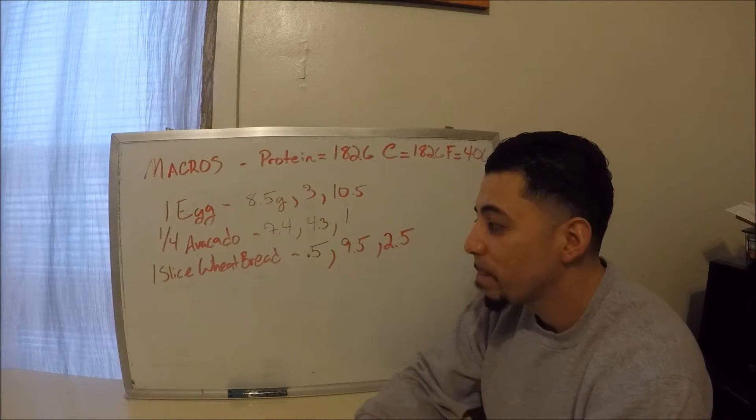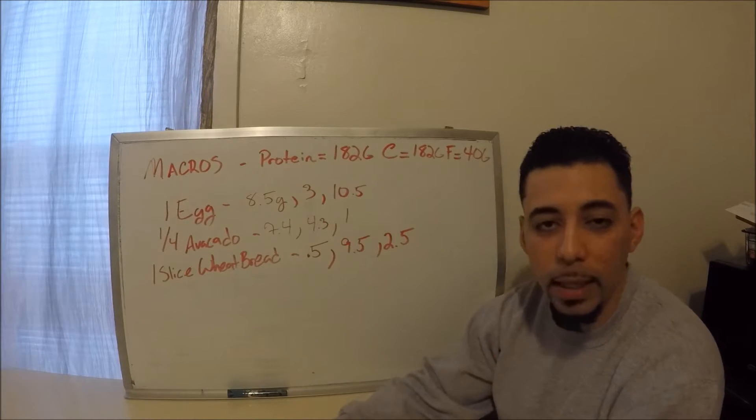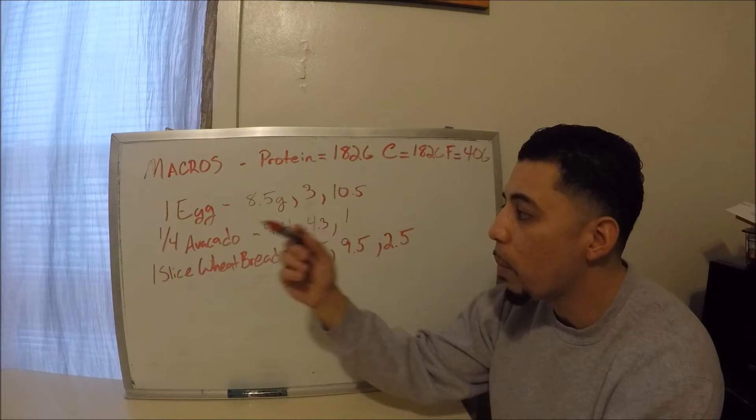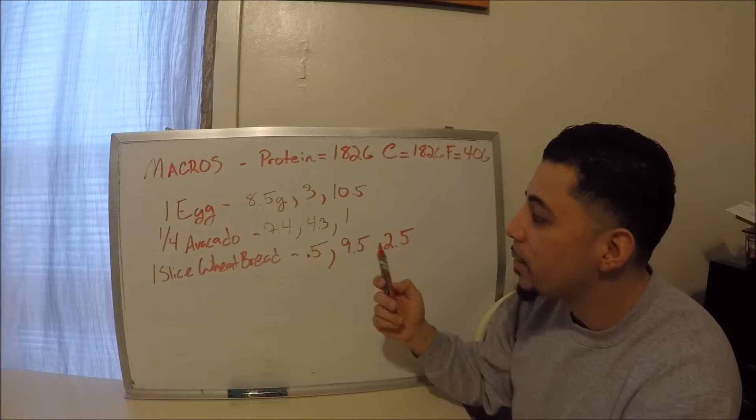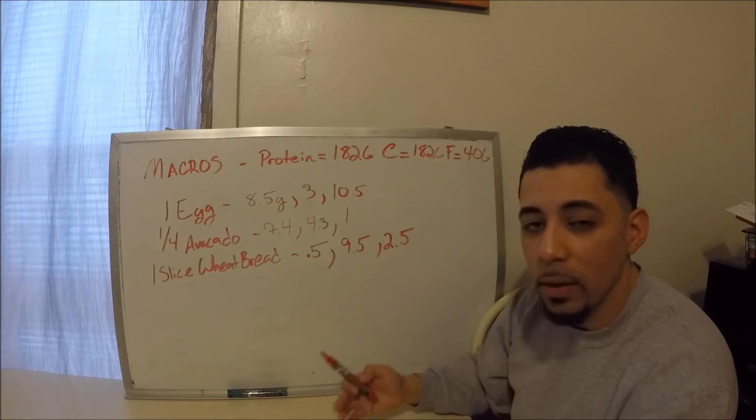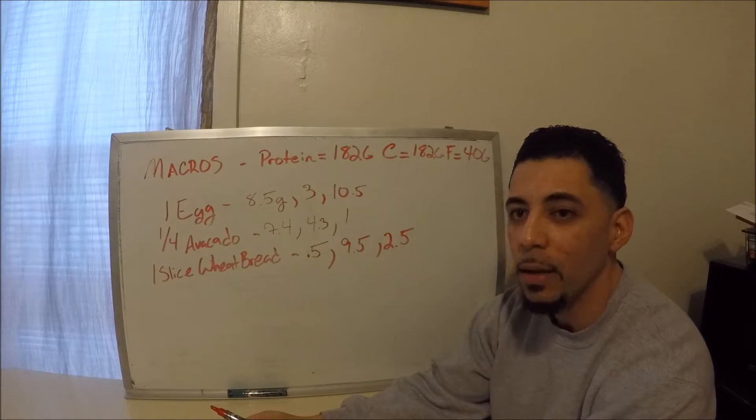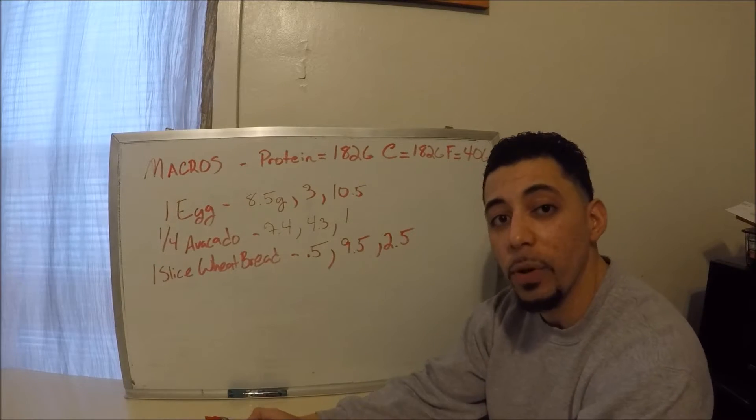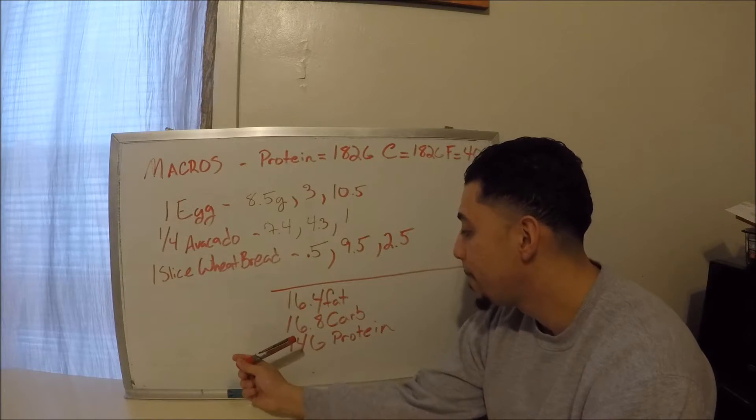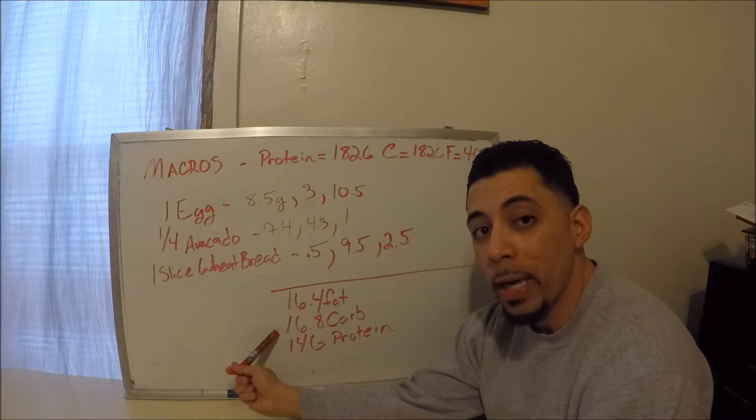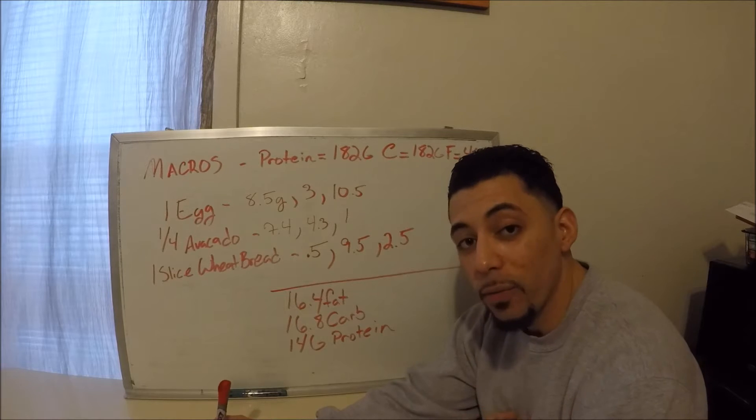Now like I said, there was a lot of questions around how do you get all that information. Just off of the nutritional facts themselves, you'll break everything down: find your fats, find your carbs, find your protein, write it out, and then obviously we've got to total it out for your breakfast. So let's go ahead and get the totals: 16.4 fat, 16.8 carbs, and 14 grams of protein.